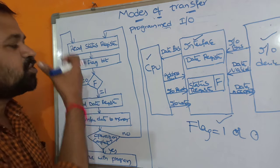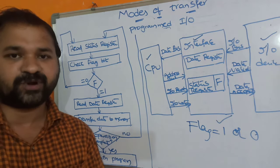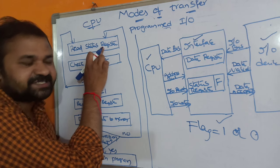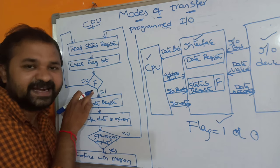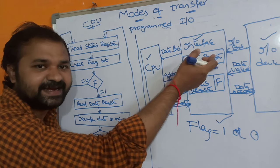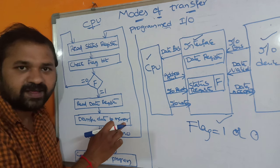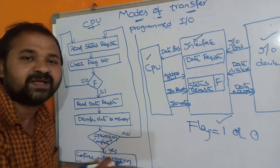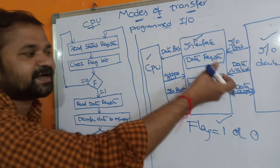Now let us see the flowchart. This flowchart demonstrates the program written in the computer. This is in the perspective of the CPU. First, the CPU reads the status register, meaning it checks the flag value. Suppose if the flag value is 1, then it specifies that data is present in the data register. So the CPU reads the data register and the data will be transferred to the memory. After that it checks whether the operation is completed or not. If the operation is completed, then it continues with execution of the remaining program. If the operation is not completed, then again it checks the status register to see whether the flag value is 1 or not.